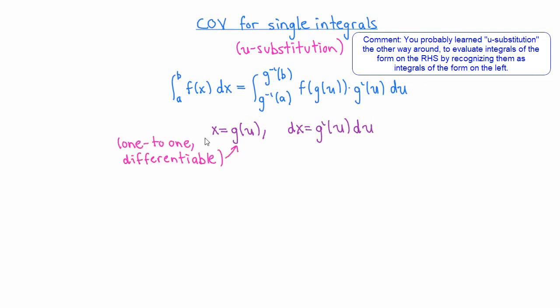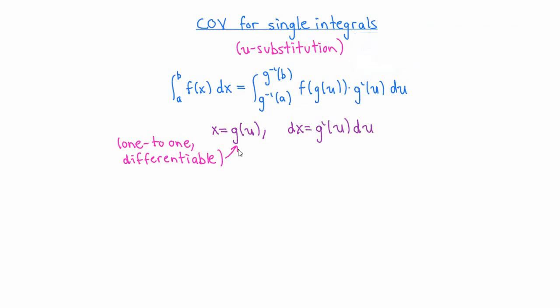Technically, it's important to assume that the function g is one-to-one — that way we know what g inverse of a and g inverse of b are — and also that it's differentiable, so that we can compute g prime of u. We also want g prime to be continuous, so that we know the integral on the right-hand side exists.